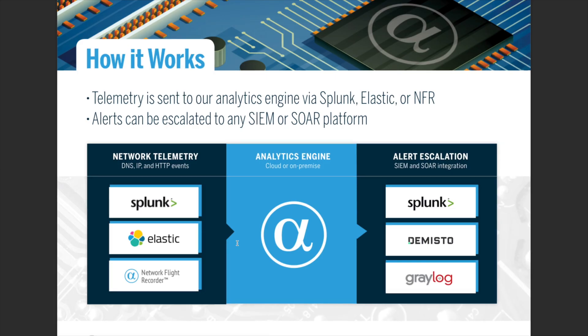In terms of the system architecture, this slide demonstrates the flow from left to right. The important thing is to achieve visibility from a network telemetry perspective. Ideally, we would want to be seeing DNS query events, IP connectivity events outbound — whether collected through BroIDS or full packet capture or firewall logs — and we can also process HTTP egress events as well.